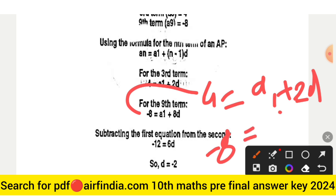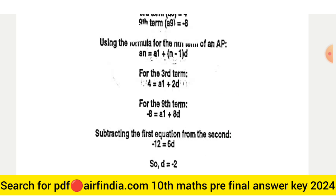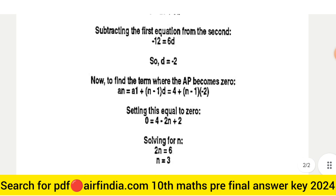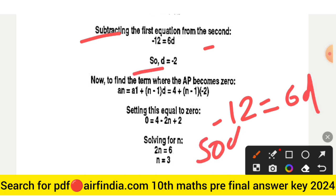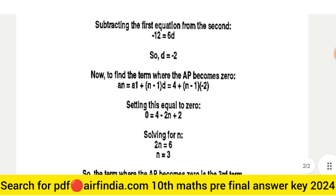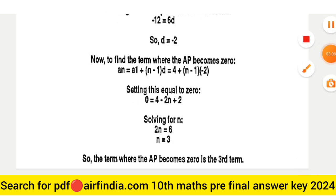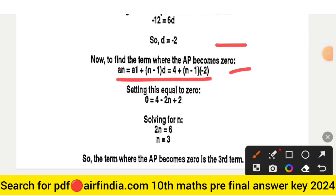For the ninth term: -8 = a₁ + 8d. Subtracting the first equation from the second: -12 = 6d, so d = -2. Now to find the term where the AP becomes 0, setting it equal to 0: 0 = 4 - 2n + 2. Solving this equation, n = 3.